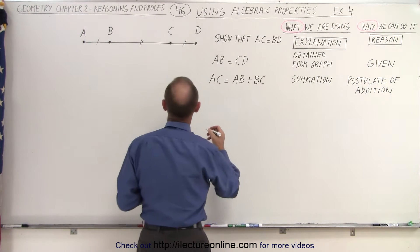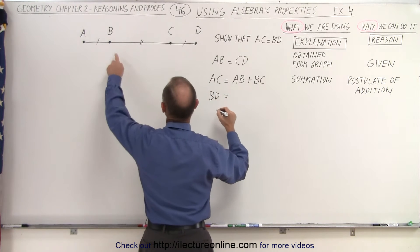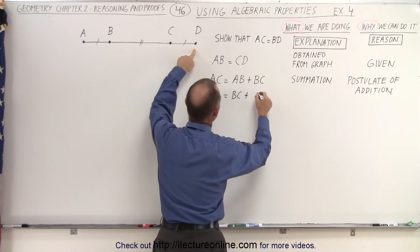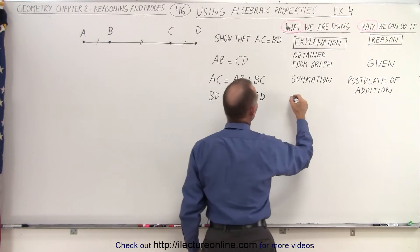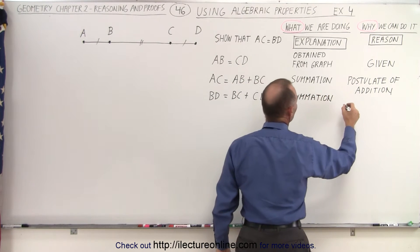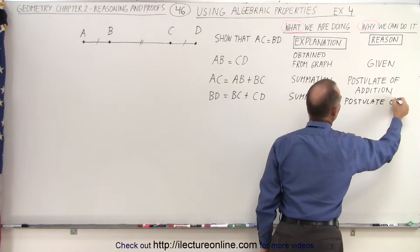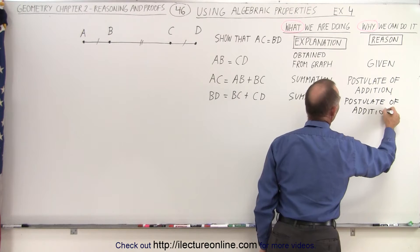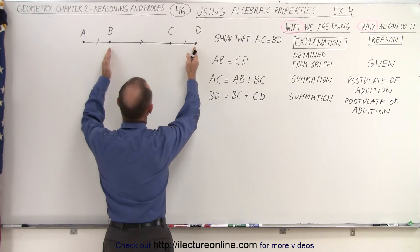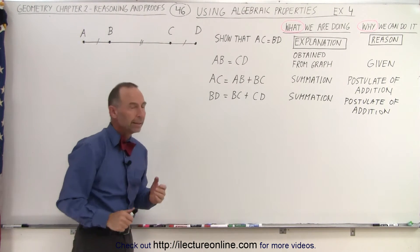On top of that, we can also say that the distance from B to D is equal to the distance from B to C plus the distance from C to D. Again, we can do this summation, and the reason we can do it is, again, the postulate of addition — it is self-evident that BD equals BC plus CD.